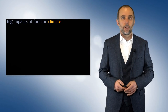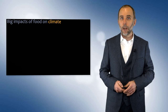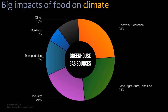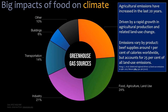Turning the equation around, our food systems also have a big impact on our climate. This graph shows the percentage share of greenhouse gas emissions by source, and food, agriculture, and associated land use accounts for about a quarter of all greenhouse gas emissions right now. Agricultural emissions have been increasing over the last 20 years, driven by rapid growth in production and land use change. Notably, beef supplies just 1% of the calories we consume worldwide, yet accounts for 25% of all land use emissions.